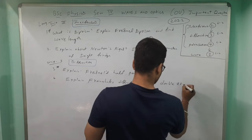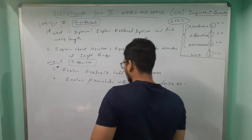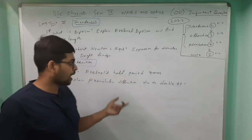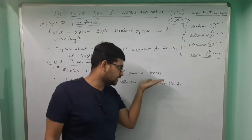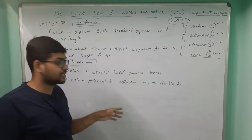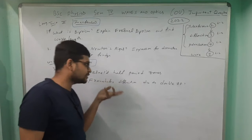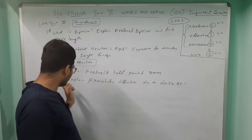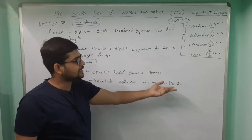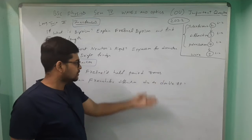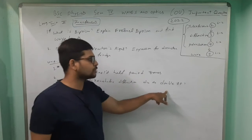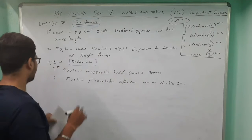The fourth question: explain Fraunhofer diffraction due to double slit. Fraunhofer diffraction due to single slit is also there, but first study double slit and then go for single slit — single slit is easier. First complete double slit, then learn single slit as well, because the majority of chances are that double slit will be asked.